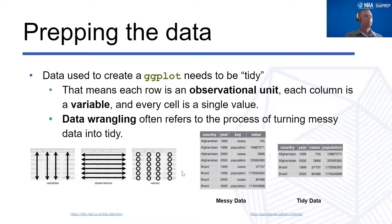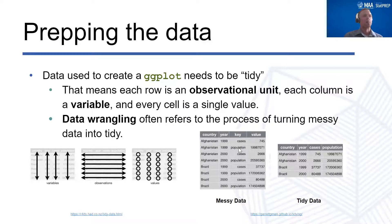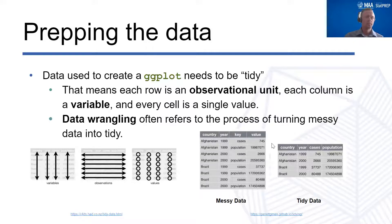For example, messy data might have key and value columns where the key column actually represents two different variables — number of cases and population for a single country in a single year. We would want to tidy this so that we had just country, year, cases, and population. This is our observational unit. That's what I mean when I say tidy data.